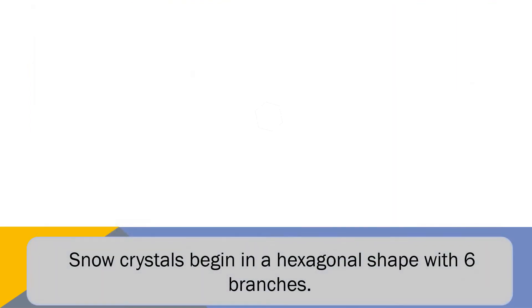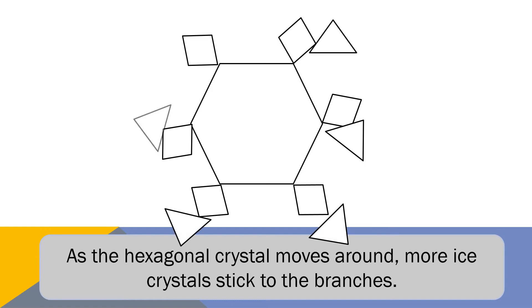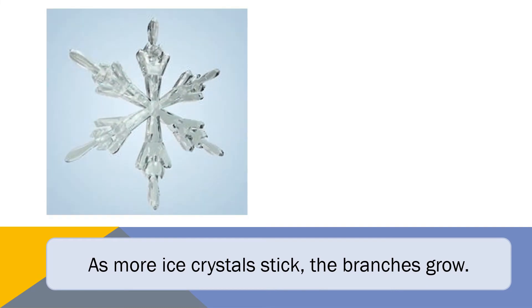Snow crystals begin as a hexagonal shape with 6 branches. As the hexagonal crystal moves around, more ice crystals stick to the branches. As more ice crystals stick, the branches grow.